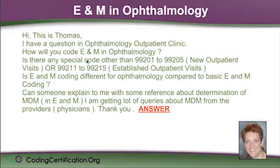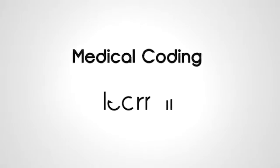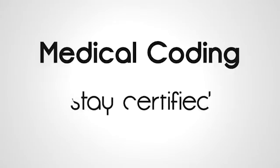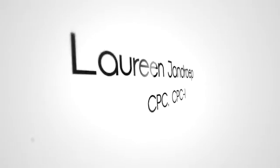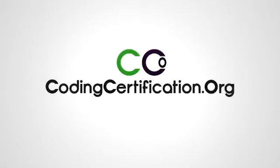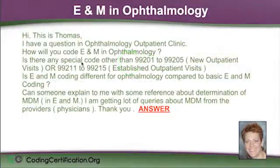This one is from Thomas. He has a question in ophthalmology outpatient clinic: how will you code E&M in ophthalmology? Are there any special codes other than 99201-205 or 211-215 for new and established outpatients? Is E&M coding different for ophthalmology compared to basic E&M coding? Can someone explain with some reference about determination of MDM and E&M?